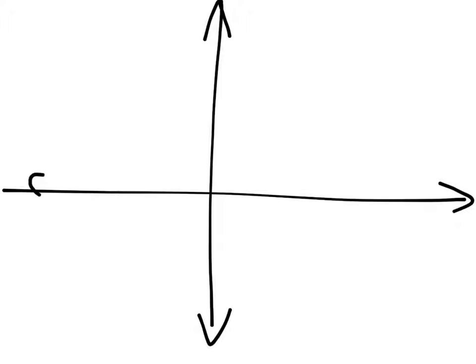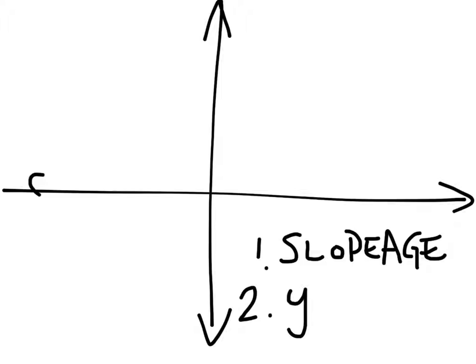You need to find two things. The first thing is the slopage. If you can find the slopage, you're doing pretty good. The second thing is the y-intercept. Does anyone have any questions on finding slope? Because that's what the last lesson was all about, finding slopage on a graph and in a table and kind of in an equation.